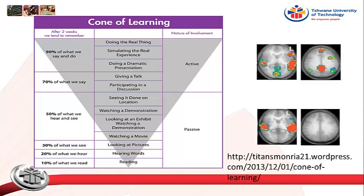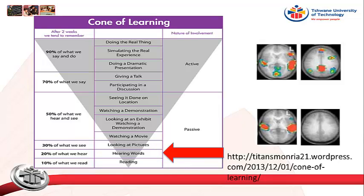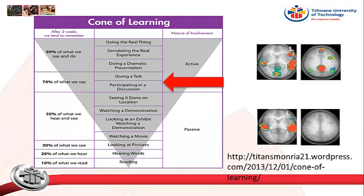Dale's cone of learning illustrates these ideas beautifully. After two weeks, we remember 10% of what we read, 20% of what we hear, 50% of what we hear and see, 70% of what we say, and 90% of what we say and do. Why is this the case? It is because doing the real thing increases brain activity and stimulates the brain to form more neuron networks.